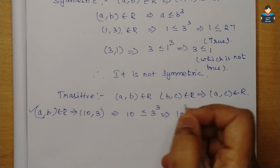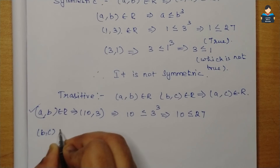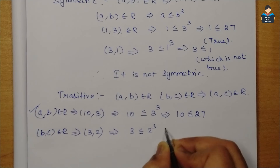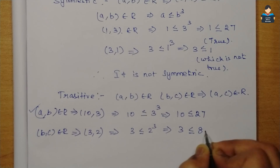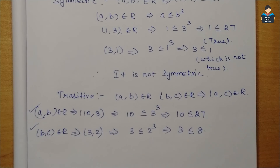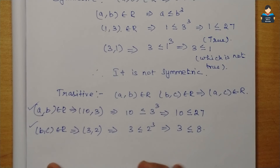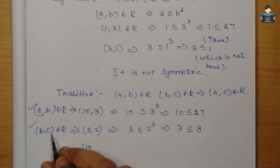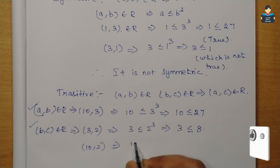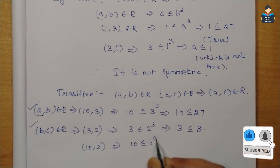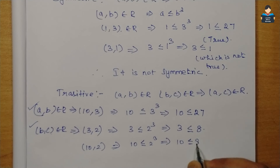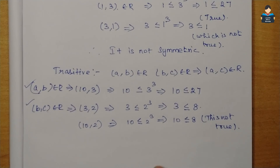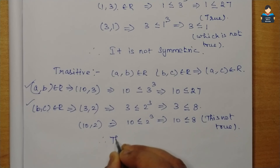Now check (b,c) — that is (2,2): true. Now check (a,c): a=10, c=2. 10 ≤ 2³ means 10 ≤ 8, which is not true. Condition is not satisfied. Therefore, the relation is not transitive.